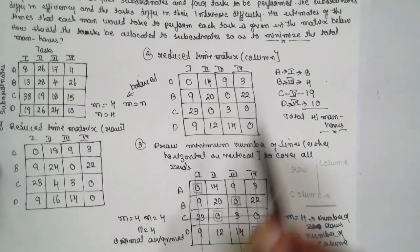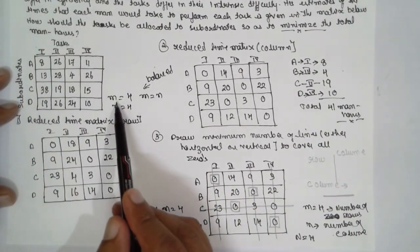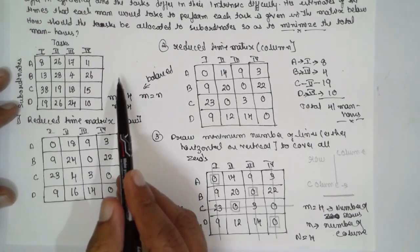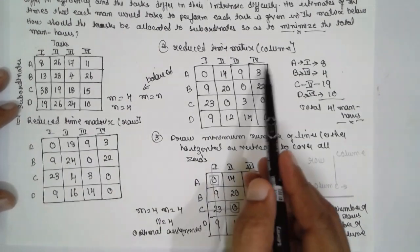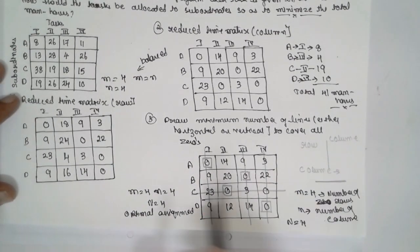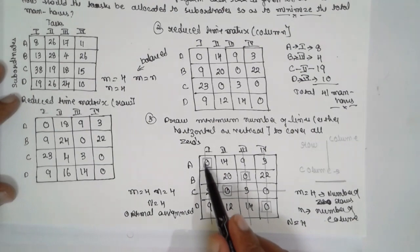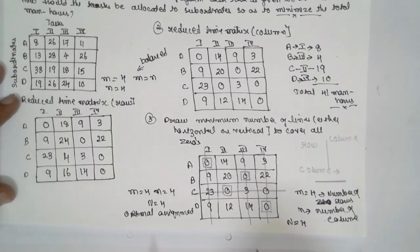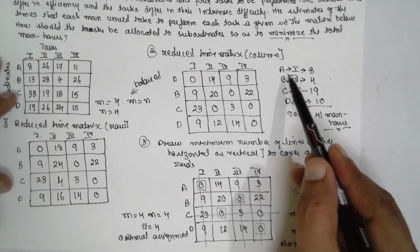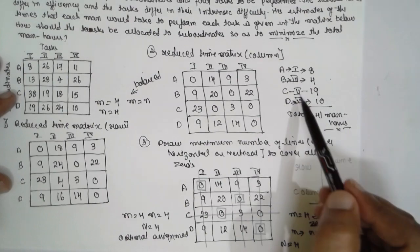This is how you solve a minimization assignment problem using the Hungarian Method or Reduced Matrix Method. At the beginning, check whether m equals n; if not, introduce a dummy. Then reduce row-wise, reduce column-wise, draw minimum lines, and assign. The condition: m = n = capital N (e.g., all equal 4), and each row and column must have at least one assignment with no repetition. If there is repetition, the solution is incorrect. Thank you very much.